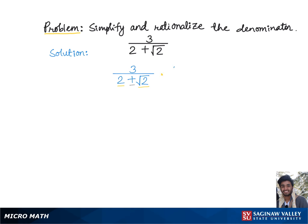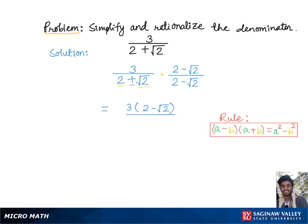So basically we'll multiply both the top and bottom of the fraction by 2 - √2, which gives us 3 times (2 - √2) over... the conjugates in the denominator can be multiplied using this rule, according to which we'll get 2² - (√2)².